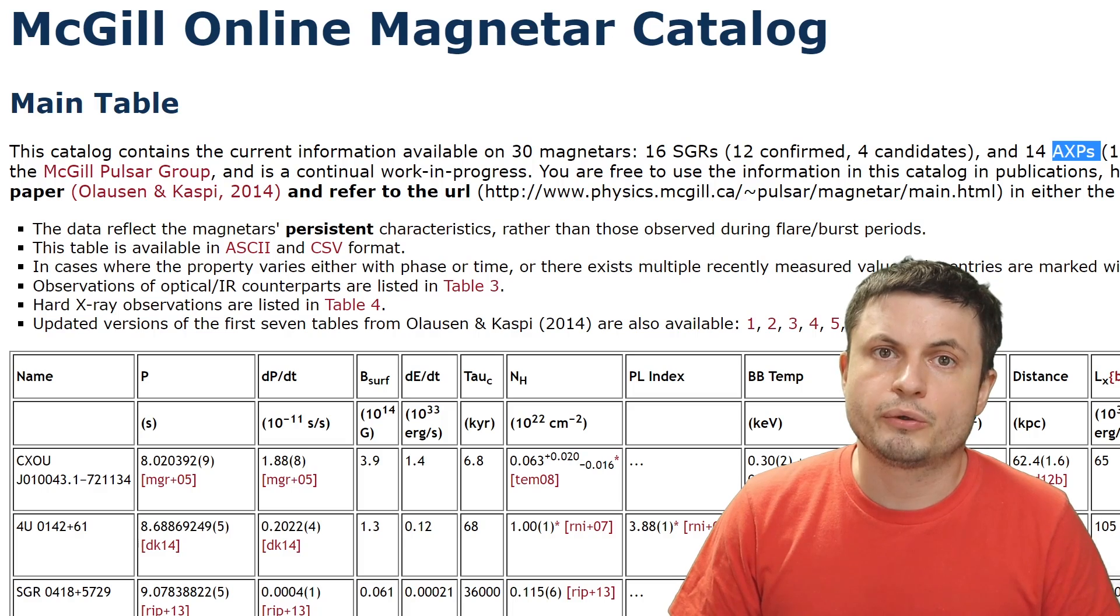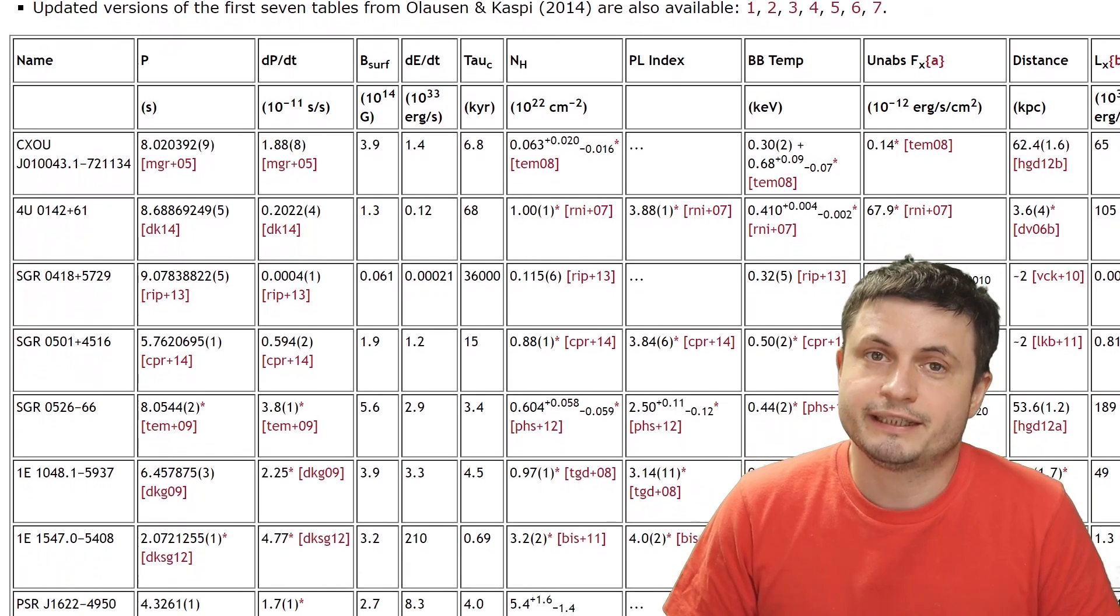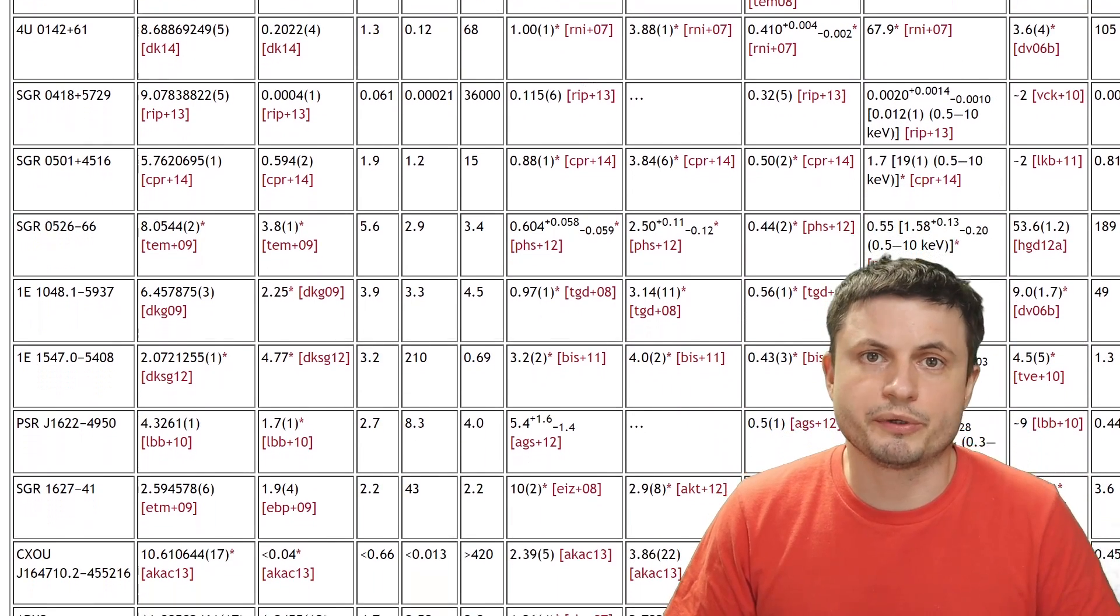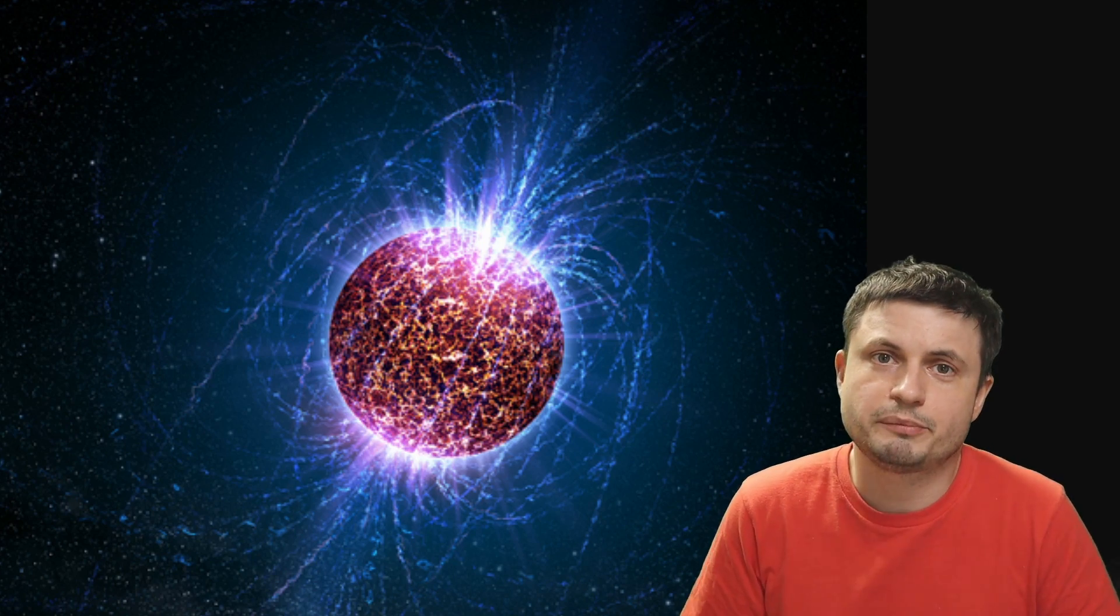We know that magnetars even today are extremely rare. The current database right here only lists 30 of them found so far, and essentially that means that they are extremely rare objects. So finding one more just like that, it would actually be kind of unlikely.